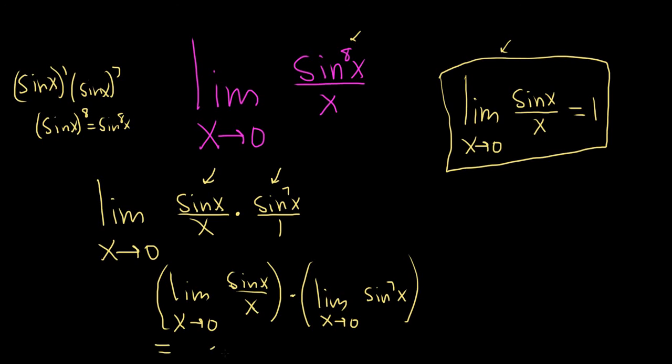The first one is equal to 1 from our formula, right? That's this here. And the second one, well, we can plug in 0, so we get sine to the 7th power of 0. Well, sine of 0 is 0. This is 1 times 0 to the 7th power, which is just 1 times 0, which is simply 0.